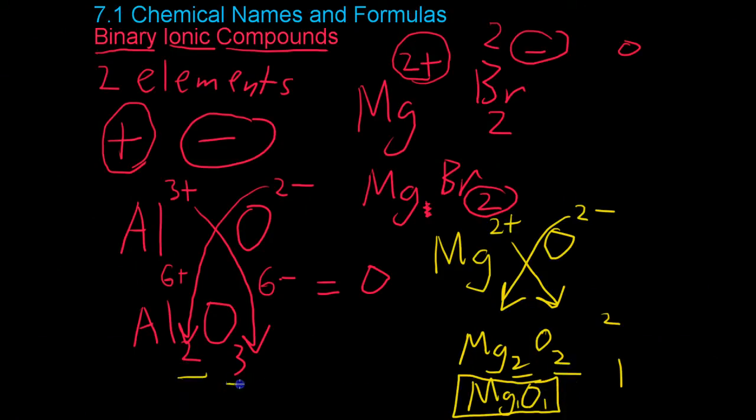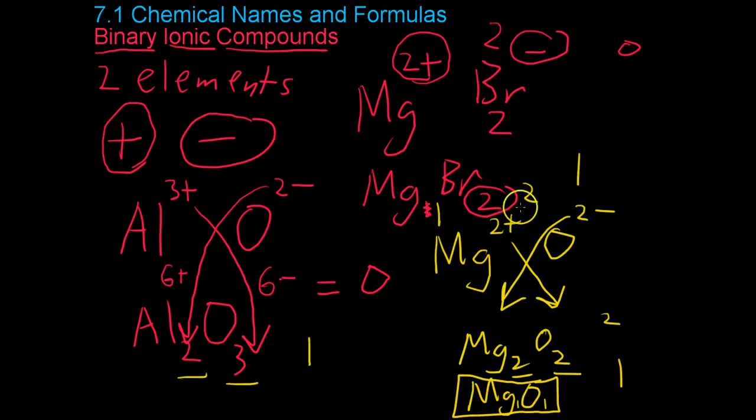And the same goes here. 2 and 3 are both prime, so their lowest common factor is 1. And in the magnesium bromide, the subscripts are 1 and 2, which have a GCF of 1, so the subscripts can't be reduced any further. And you know that is the lowest common formula unit.